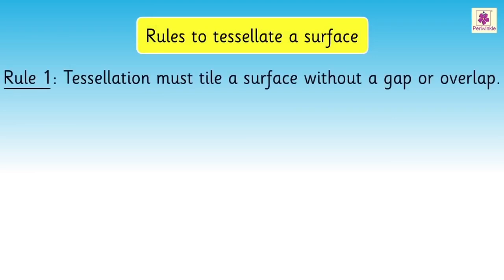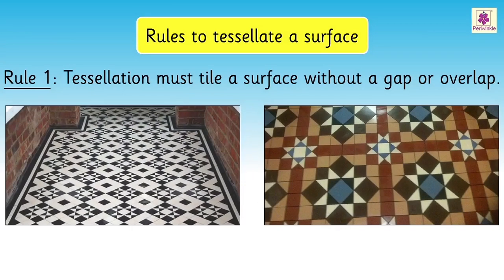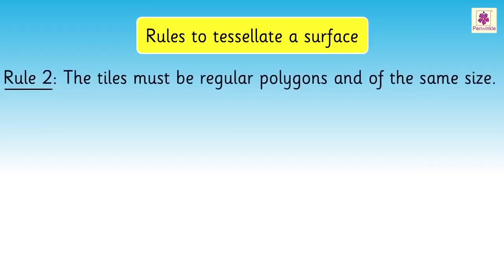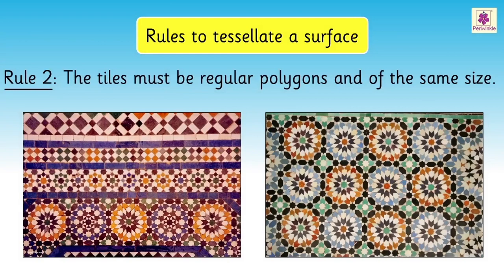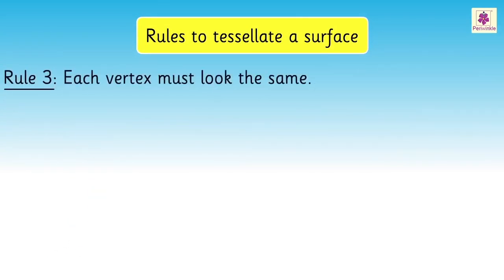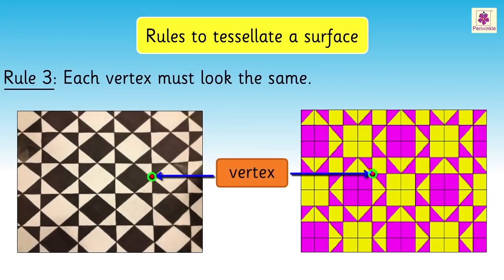Did you know we follow certain rules to tessellate a surface? Rule 1: Tessellation must tile a surface without a gap or overlap. Rule 2: The tiles must be regular polygons and of the same size. Rule 3: Each vertex must look the same.